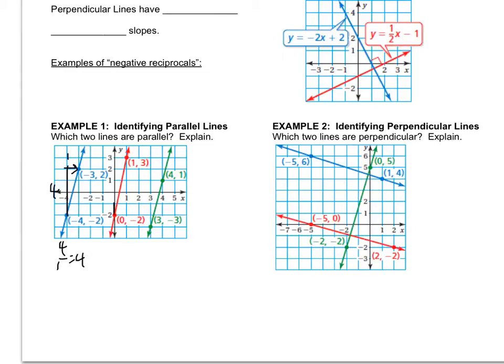The slope of the red line is up five, right one. And the slope of the green line is up four, right one.